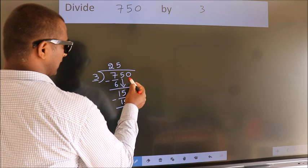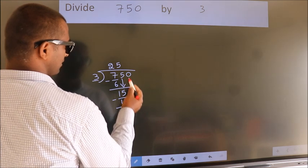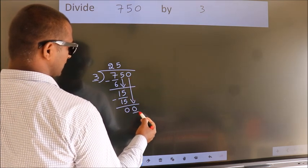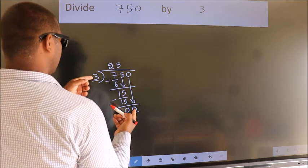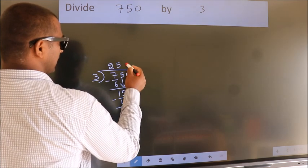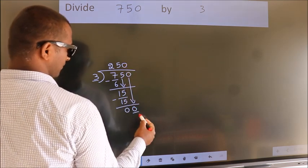After this, bring down the beside number. So, 0 down. So, 0. When do we get 0? In 3 table. 3 times 0 is 0.